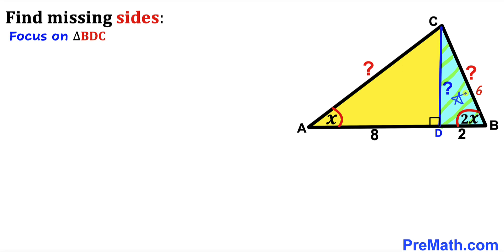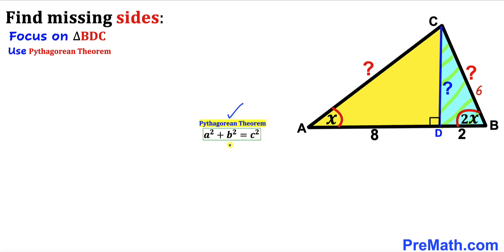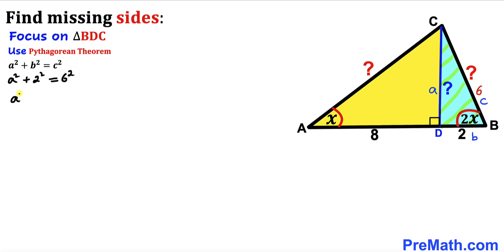Now let's focus on right triangle BDC, whose side lengths are BD=2 and BC=6, with CD unknown. Applying the Pythagorean theorem — a² + b² = c² — with a=CD, b=2, and c=6: we get a² + 4 = 36. Subtracting 4 from both sides gives a² = 32.